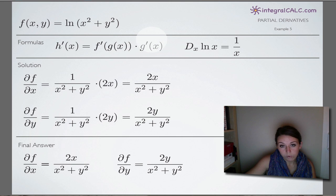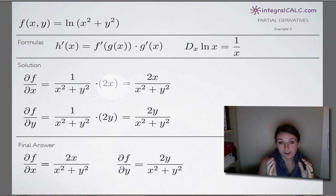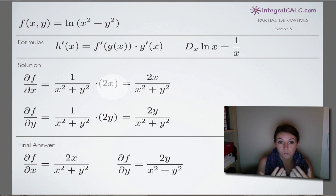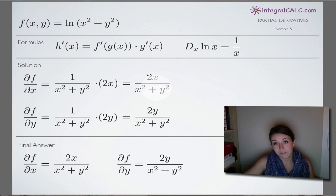Then, because our chain rule formula is to multiply by the derivative of the inside function — x squared plus y squared — we multiply by that derivative. Because we're taking the partial derivative with respect to x, we treat y as a constant and x as our variable. The derivative of x squared is 2x, and since y squared is a constant, its derivative is 0. So the derivative of the inside function is just 2x. We simplify to get our final answer for the partial derivative of f with respect to x: 2x over (x squared plus y squared).